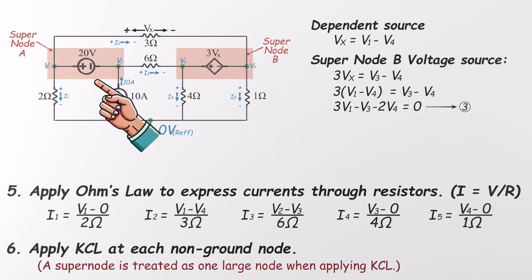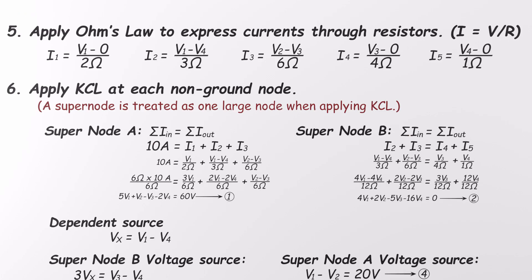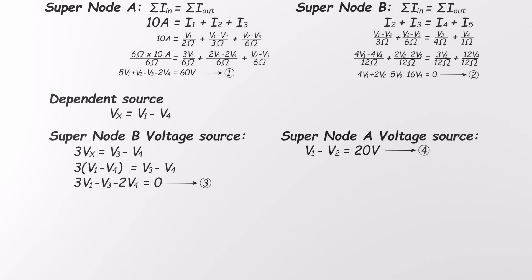Now let's use the independent voltage source between V1 and V2. That one's simple. V1 minus V2 equals 20 volts. That's our fourth equation. And just like that, we've got four equations and four unknowns, V1, V2, V3, and V4. Time to solve.